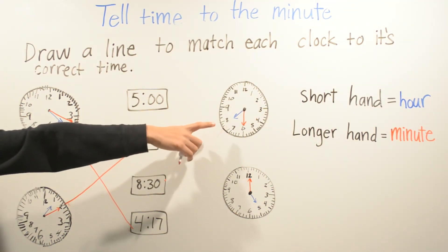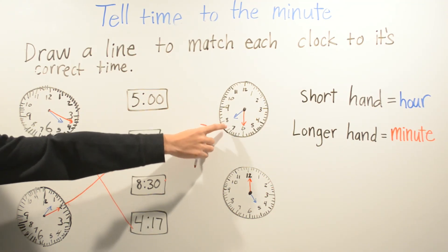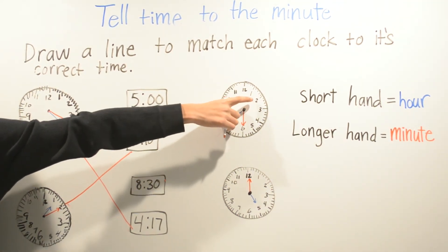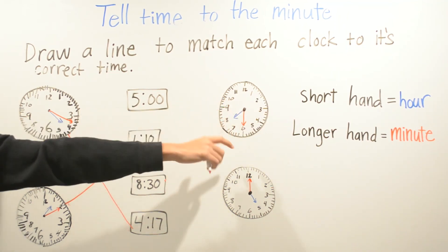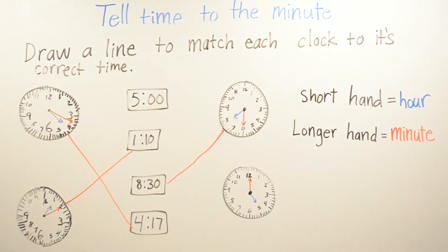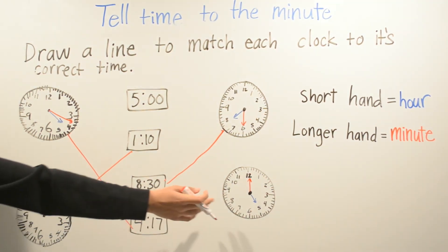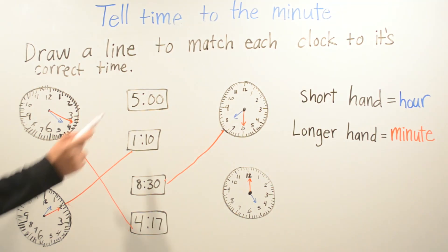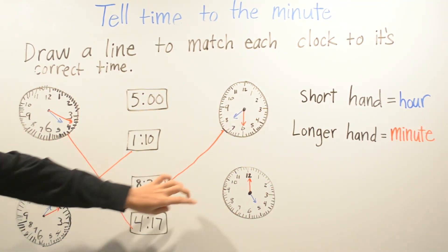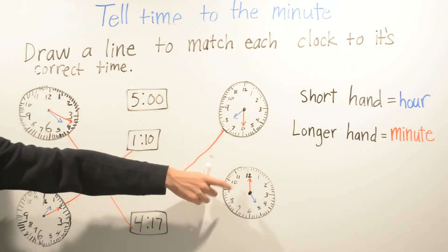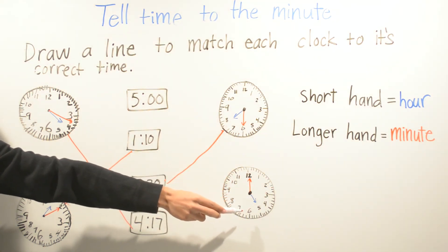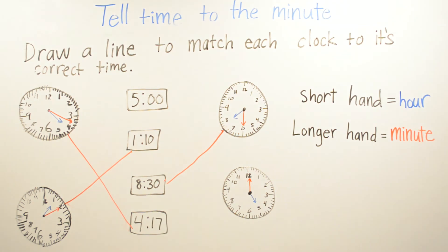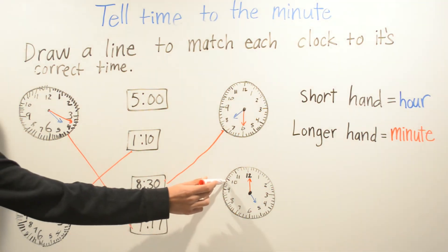For this clock, our smaller hand is on the 8, so our hour is 8. Our minutes are 5, 10, 15, 20, 25, 30, so the correct answer is 8:30. For the last clock, the smaller hand is on the 5, so our hour is 5. Counting the minutes: 5, 10, 15, 20, 25, 30, 35, 40, 45, 50, 55 — 60 minutes is an hour. So this one is going to be 5 o'clock.